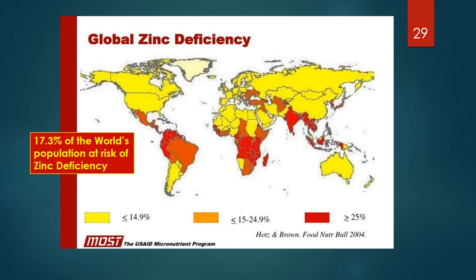This slide from USAID shows the prevalence of zinc deficiency worldwide, with higher prevalence of greater than or equal to 25% in Central and South America, Southern Africa, India, and areas of Southeast Asia.